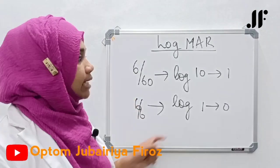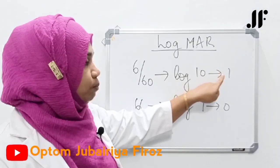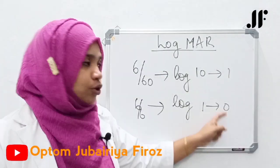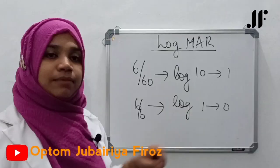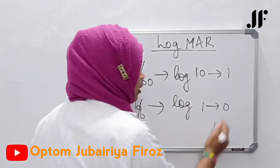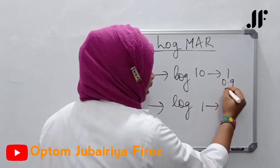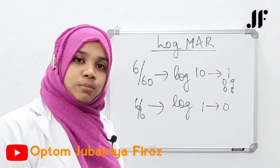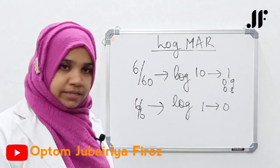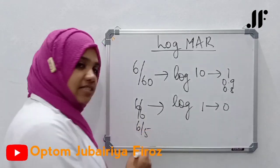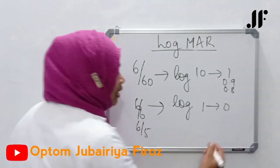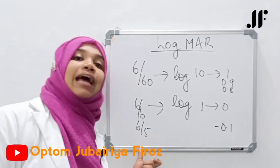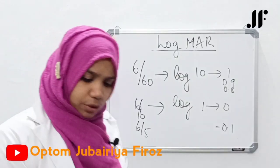LogMAR charts topmost line is 1. 6 by 6 is 0. It decreases in 0.1 factor. First line is 1, second line is 0.9, 0.8, 0.7. The lesser the LogMAR value, better is the visual acuity. In this, 6 by 5, this log value becomes negative. Negative log value indicates hyper acuity.